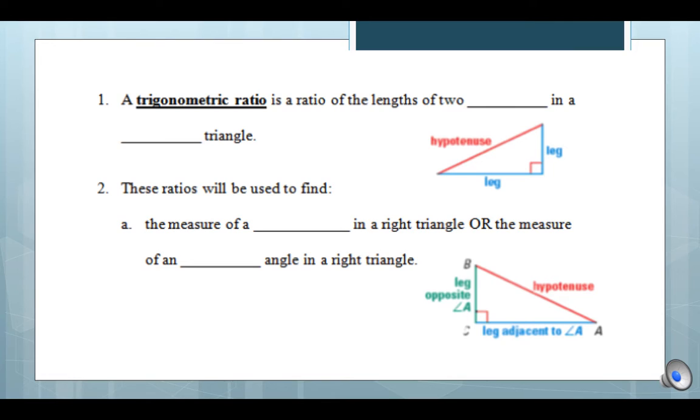So first of all, what is a trig ratio? A trig ratio is a comparison of lengths of two sides in a right triangle. These ratios will be used to find the measure of a side in a right triangle or the measure of one of the acute angles in a right triangle.